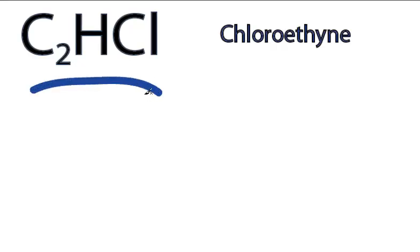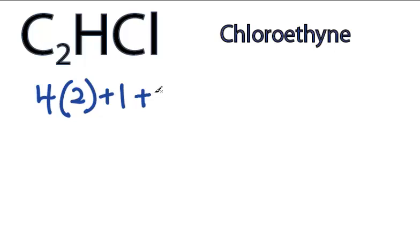This is the C2HCl Lewis structure. Carbon is in group 4 or 14. It has four valence electrons, but we have two of them, hydrogen 1 and chlorine 7, for a total of 16 valence electrons for C2HCl.